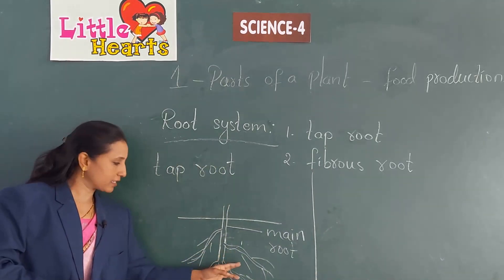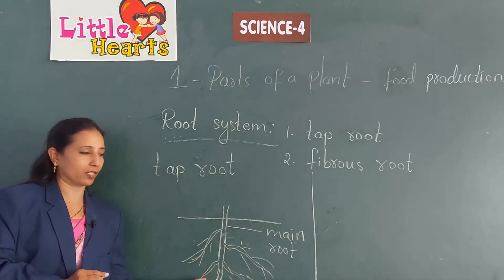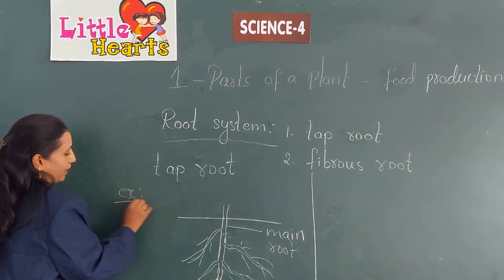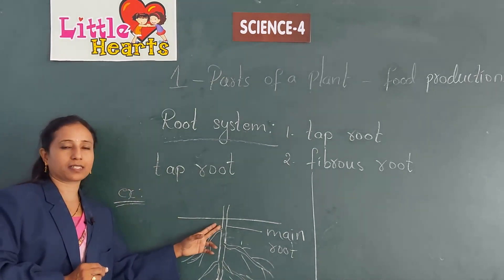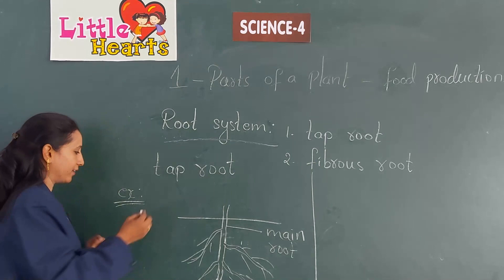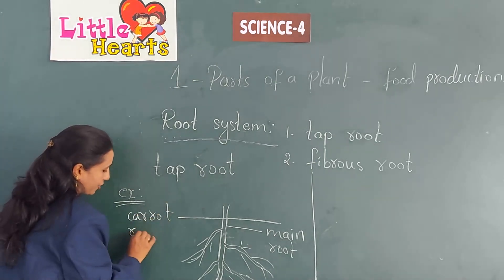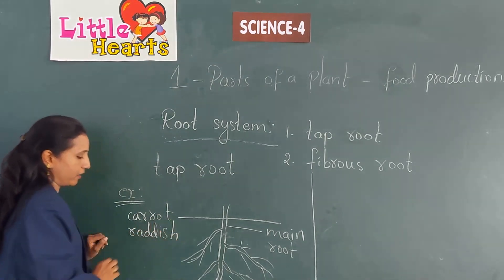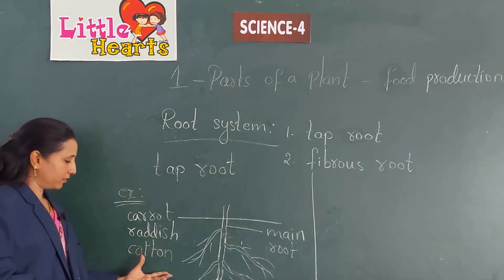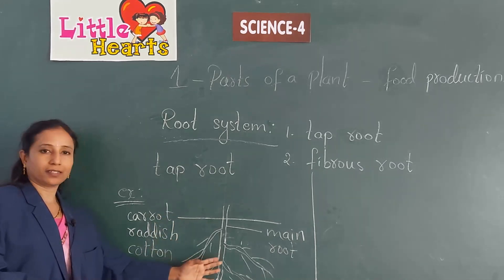This main root has some small roots starting from it. Examples of tap root — think of some roots which have one long main root. For example, carrot, radish, and some other plants like the cotton plant. These are examples of plants which have tap root.